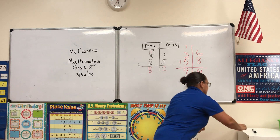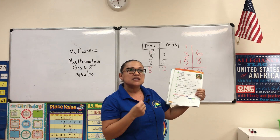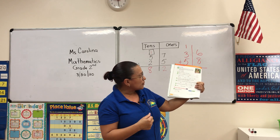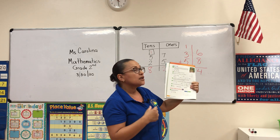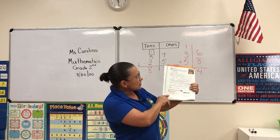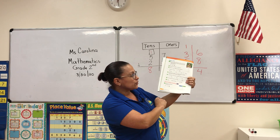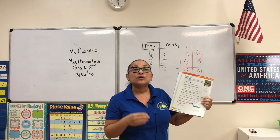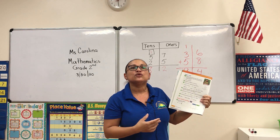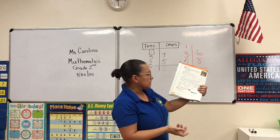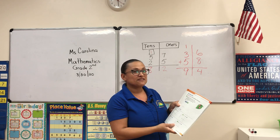Now let's check your understanding. We have 75 plus 14. Line up your numbers into tens and ones: 75 has 7 in the tens and 5 in the ones; 14 has 1 in the tens and 4 in the ones. This time we don't regroup because 5 plus 4 is 9, which is not more than 9. Then 7 plus 1 equals 8, so the answer is 89.